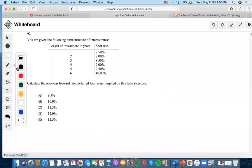Okay, so for this problem it says calculate the one year forward rate deferred four years. So what does that mean?